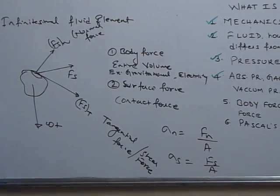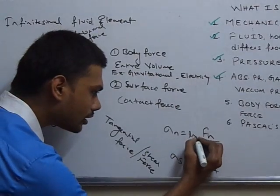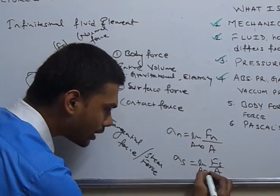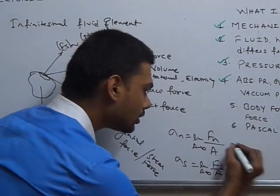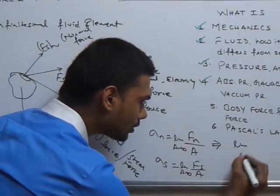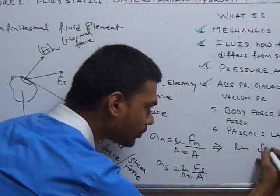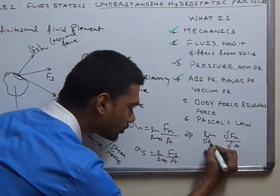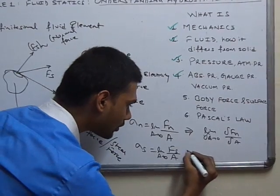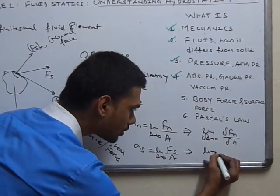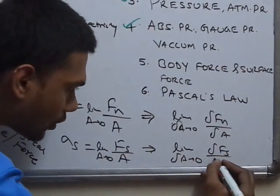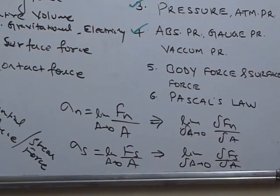In defining these stresses, the area is taken as tending to zero — so we express it as a limit. We take the small force on the small element divided by the area as the limit of that area tends to zero. Similarly, for shear force, the limit of area tending to zero gives rise to shear stress.